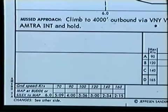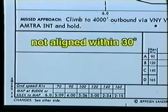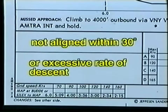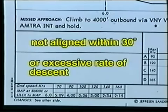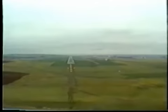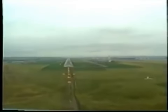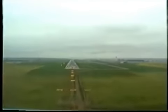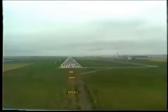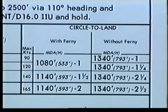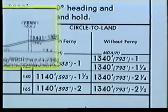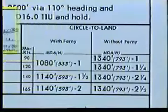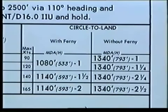This example shows an approach which doesn't have straight-in landing minimums. Straight-in minimums are omitted when the final approach is not aligned within 30 degrees of the runway, or where an excessive rate of descent, generally over 400 feet per nautical mile, would be required between the final approach fix and the missed approach point. On the other hand, you are not prohibited from landing straight-in when an approach does not show straight-in landing minimums, provided you break out in time to position your aircraft and make a normal final descent to the runway. Notice that there are different minimums for this approach depending on whether or not you can identify Fernie intersection. Since Fernie is a step-down fix, once you have identified and crossed it, you can descend to the lower minimum altitude.